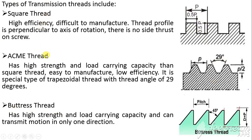The buttress thread is a combination of square thread and acme thread. On one side the angle is 90 degrees and the other side has a sloped surface. It has high strength and high load-carrying capacity and can transmit motion in only one direction. The included angle is 45 degrees and the depth of the thread is equal to the pitch.